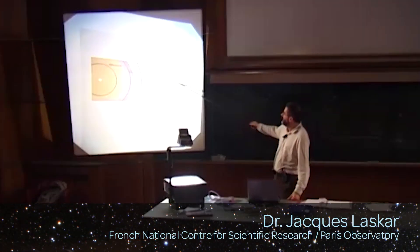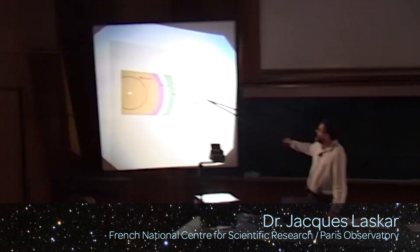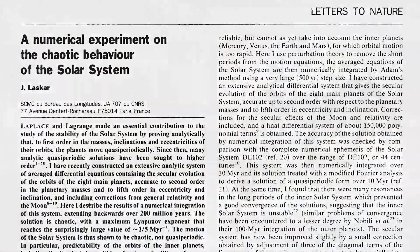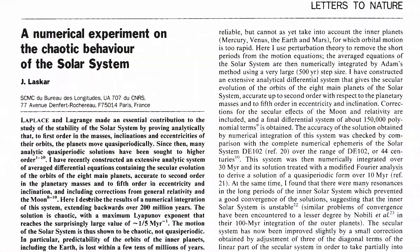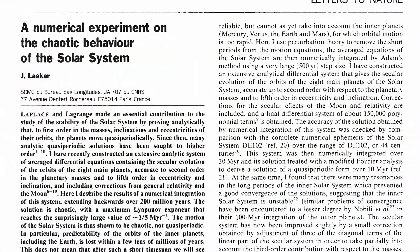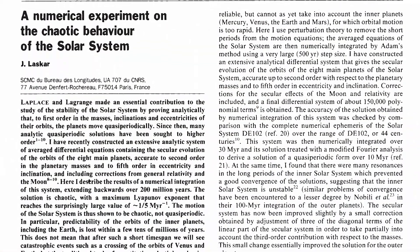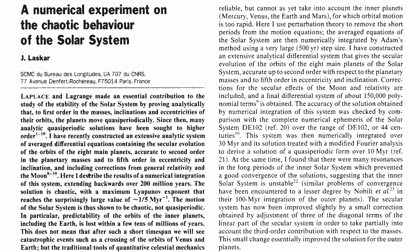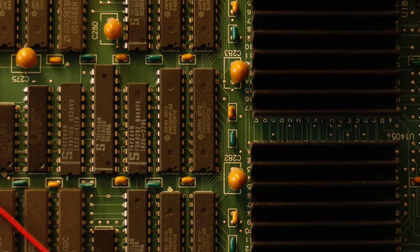Jacques Laskar was inspired by that result and studied the evolution of the whole solar system using an approximation of the equations of motion, showing that the whole solar system evolved chaotically. Because that calculation involved approximations, we wanted to do a full simulation of Newton's equations with relativistic corrections to see if Laskar was correct.